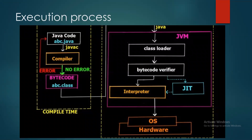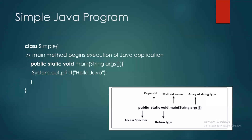Verifier کے بعد bytecode interpreter کے پاس چلا جاتا ہے اور interpreter اسے machine language میں interpret کر دیتا ہے۔ پھر ہمارے پاس operating system اور hardware ہے جو اس machine code کو سمجھ لیتا ہے جو interpreter نے create کیا ہے۔ یہ پورا process ہے Java file کی execution کا — آپ کو پتا ہونا چاہیے کہ Java کا code کس طرح execute ہوتا ہے۔